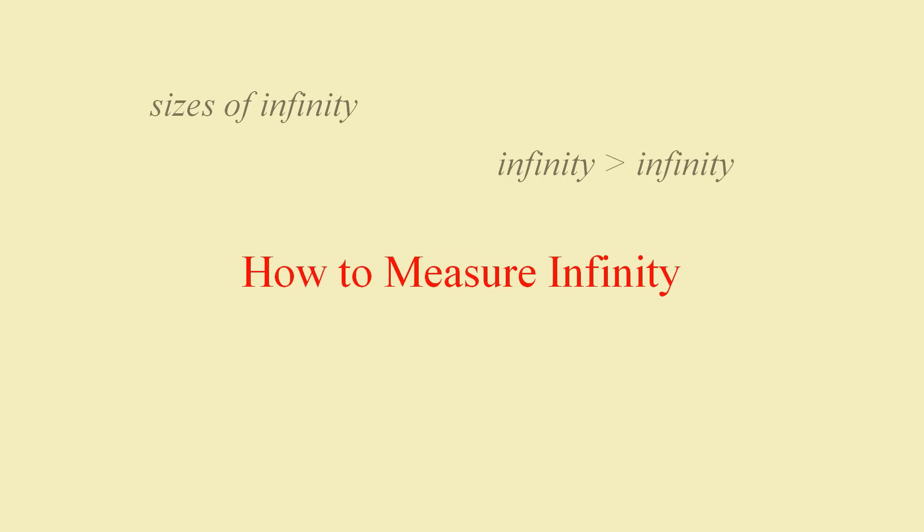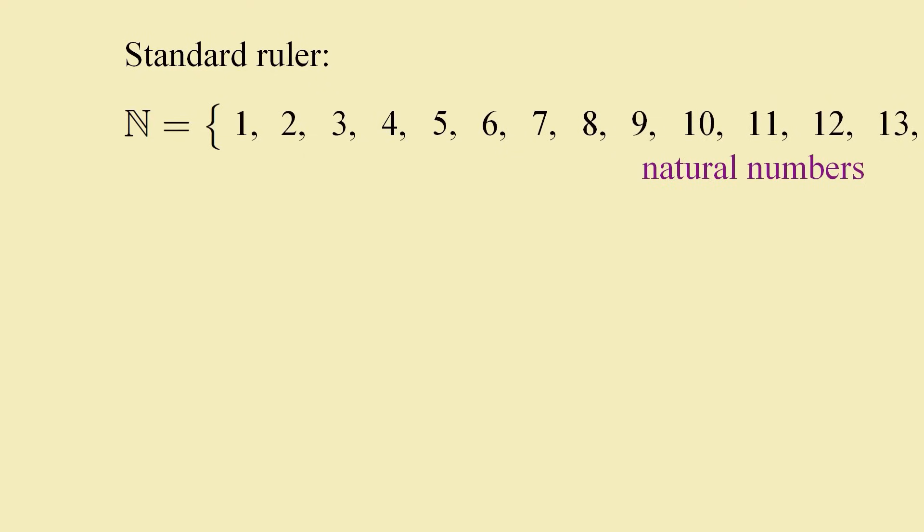Now again, this idea has already been covered profusely in other places, so I'll just give a quick review of it here. For those of you already familiar with these ideas, you can skip ahead to this timestamp if you want. To measure infinity, we need a standard ruler, an infinite unit of measurement, so to speak. The standard unit for that is the set of positive whole numbers, the so-called natural numbers: 1, 2, 3, 4, 5, and so on.